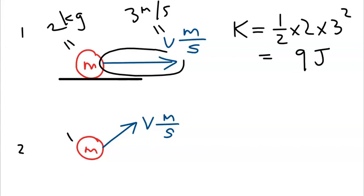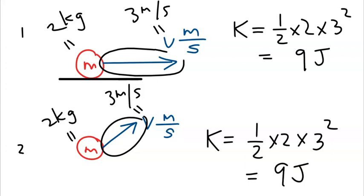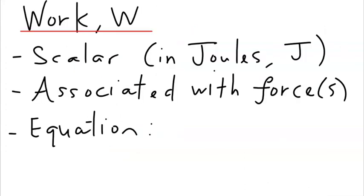In case two, the same object with mass 2 kg moves with the same speed of 3 m/s but in a slightly different direction. Recomputing: K = ½ × 2 × 3² = 9 joules — the same result. The point is that kinetic energy is independent of the direction of motion; it depends only on mass and speed.